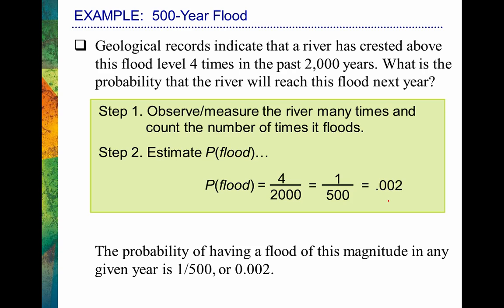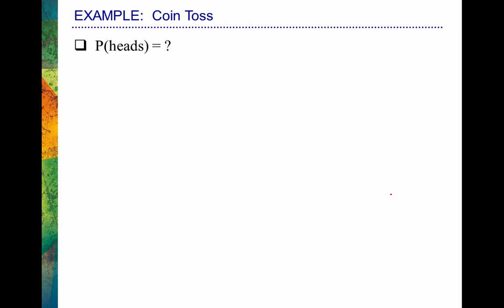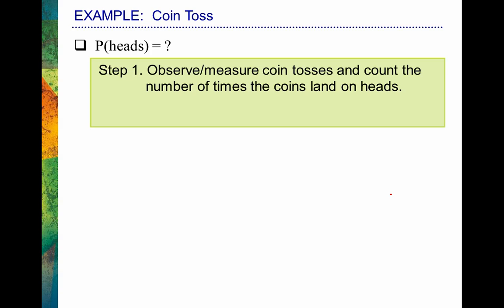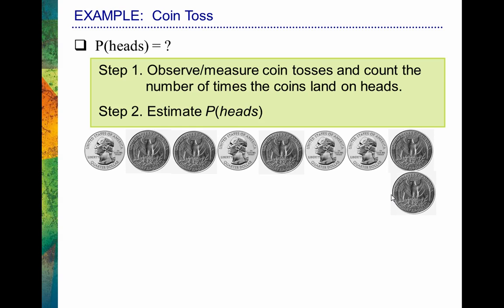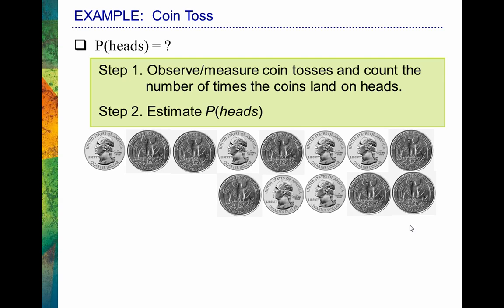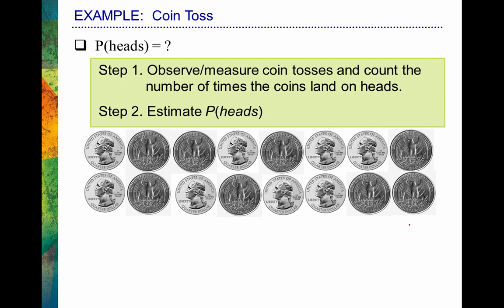Let's look at the relative frequency perspective again with a coin flip example. What's the probability of flipping a coin and having it be heads? We measure and observe the coin tosses, then count the number of times the coin lands heads. So I flip a coin, it turns out heads; flip again, it's tails — and I do this over the long run, many times. To get a good estimate of the probability of it coming up heads, we need to flip that coin lots of times — hundreds of times would probably be a good idea.